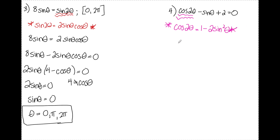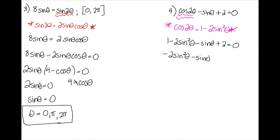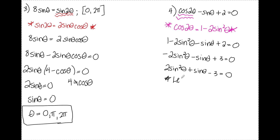Substituting that in, I have 1 minus 2 sine squared theta minus sine theta plus 2 equals 0. Rearranging gives negative 2 sine squared minus sine plus 3 equals 0. Since I don't want a negative leading coefficient, I divide by negative 1, giving 2 sine squared plus sine minus 3 equals 0.